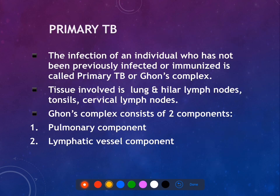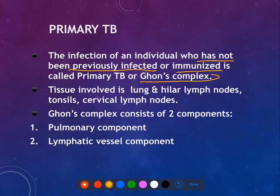There are two types of tuberculosis: primary tuberculosis and secondary tuberculosis. Primary tuberculosis occurs in a patient who has not been previously infected or immunized. One important thing to remember about primary tuberculosis is the formation of the Ghon's complex, which has a pulmonary component and a lymphatic vessel component.